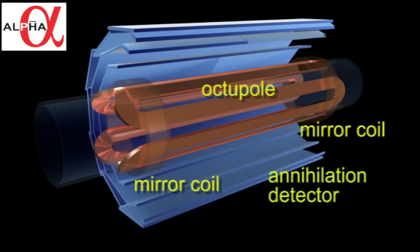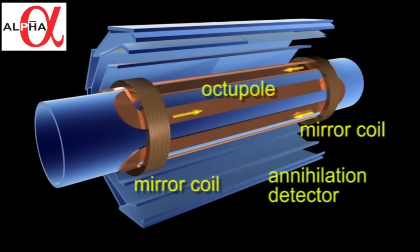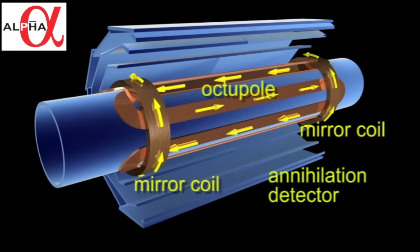These magnets together generate a sort of magnetic bathtub potential where there is a minimum in field strength at the center of the apparatus and a maximum along the walls and the ends.